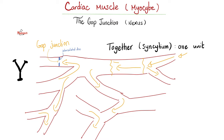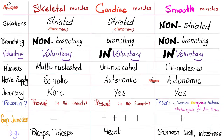The word 'chrono' means time and 'syn' means same — so 'synchronize' means accessing the same thing at the same time. This is where the word syncytium comes from: all of your ventricles contract together at the same time as one unit. Cardiac muscles are striated, branching, involuntary, uninucleated, and automatic — they have automaticity thanks to the SA node. They have troponin, lots of gap junctions or Nexus or connexins, and of course cardiac muscles are found in your heart.